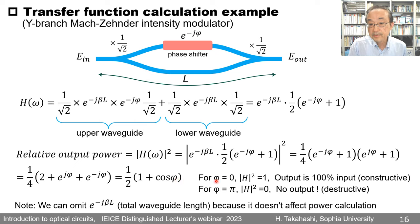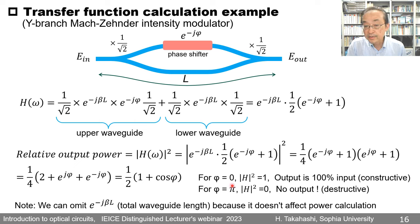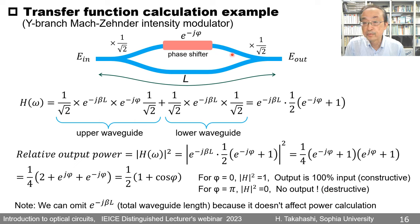When the phase shifter is set to phi = 0, the relative optical output power is 1 — 100% of the input passes through. This is constructive interference between the two lights. If we set the phase shifter to phi = pi, cosine(pi) = -1, so the relative optical power is 0 — there is no output. This is destructive interference between the two waveguides.